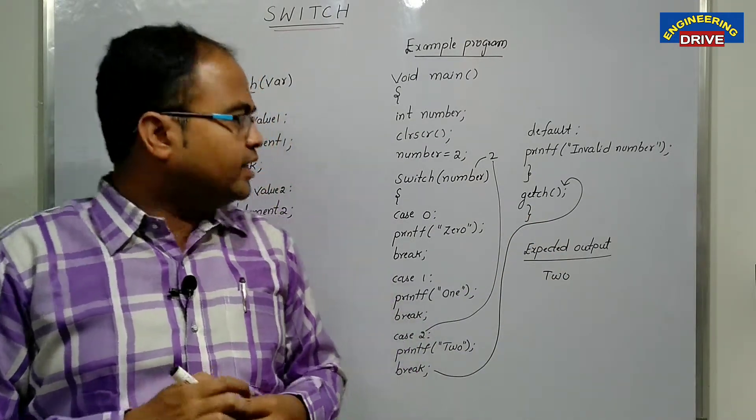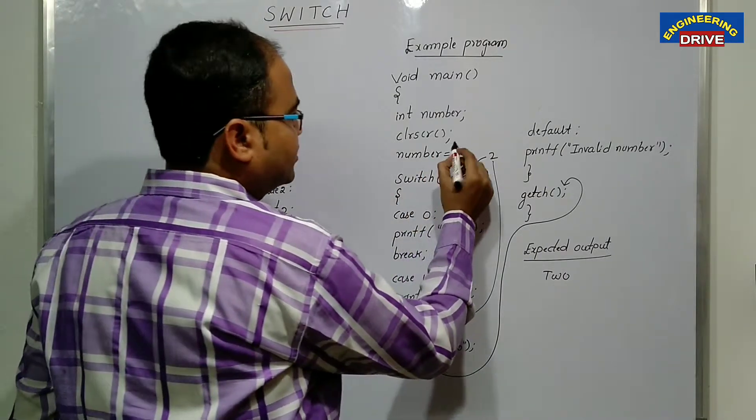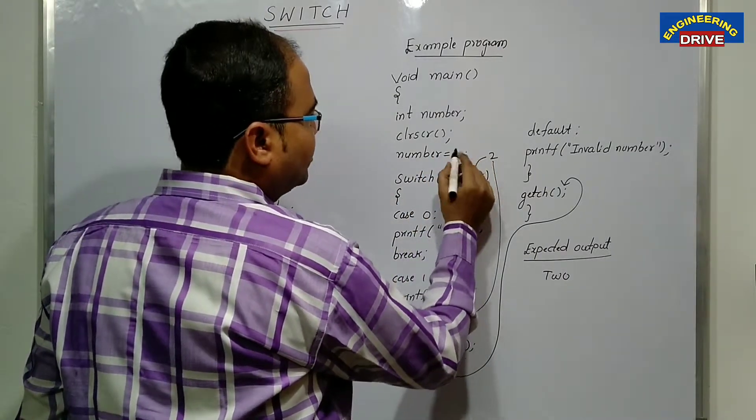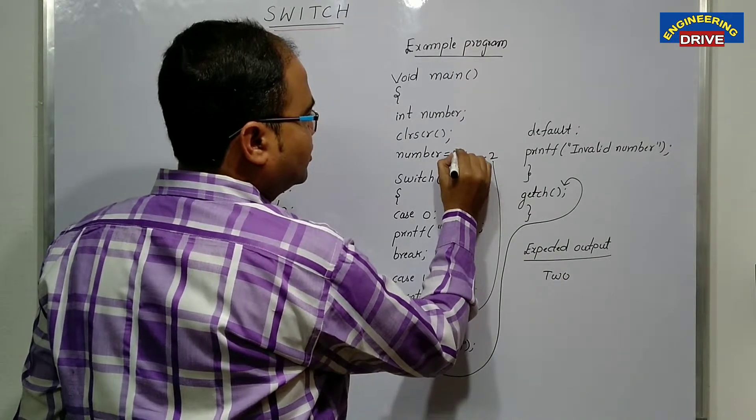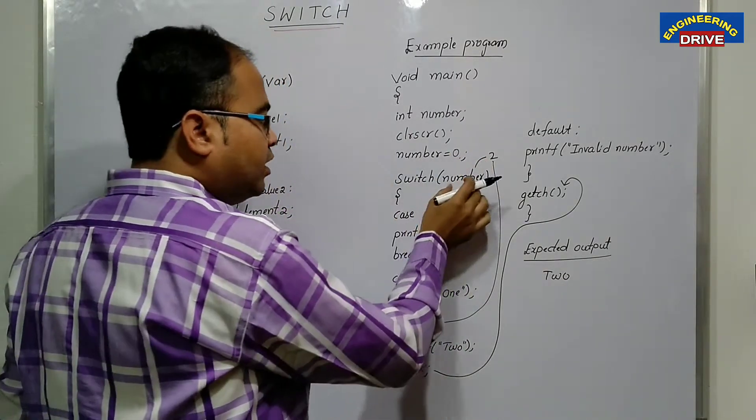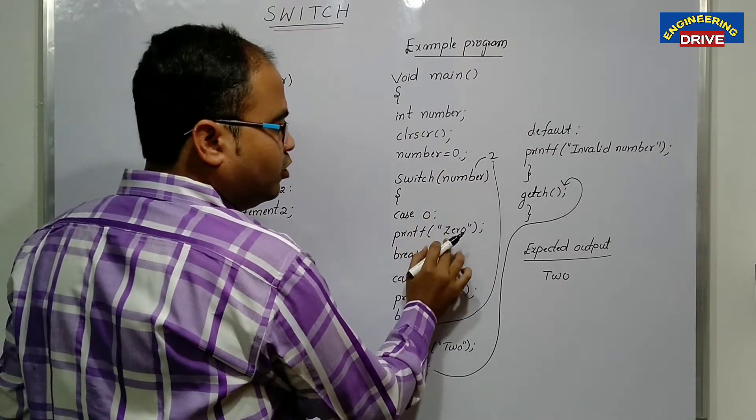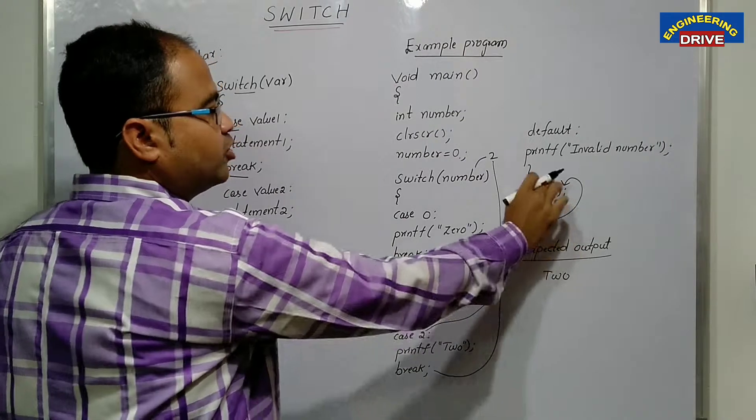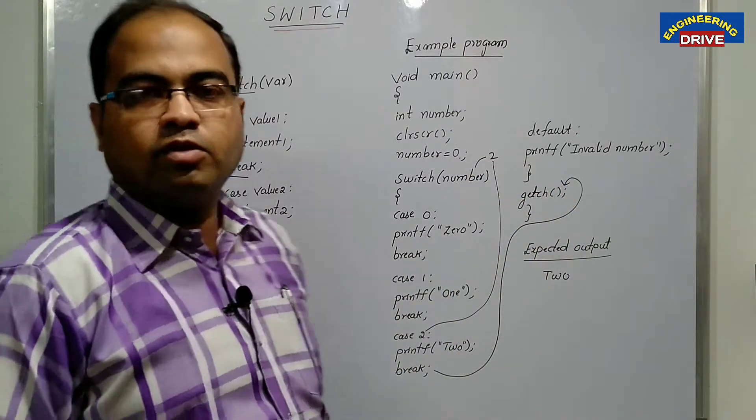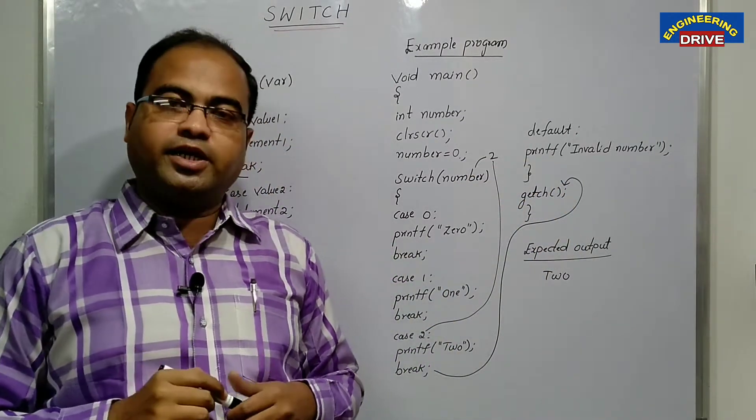Okay, let us say if I have given the value of number as here, I have given the number value as zero, then what happened case zero itself matches with the number zero. So that's why you will get output zero break means it will take the control to GETCH. Okay, this is the working of switch my dear students.